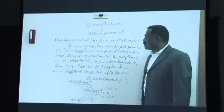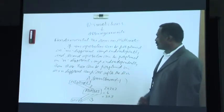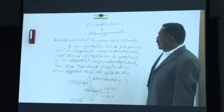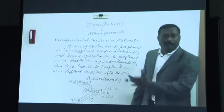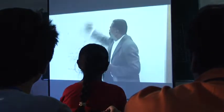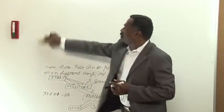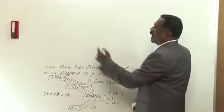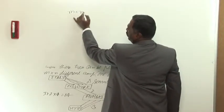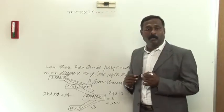If an operation can be performed in M different ways independently, and a second operation can be performed in N different ways independently, these two operations can be performed in m into n different ways, one after the other or simultaneously. And it can be extended to any number of operations — if the first operation can be performed in m ways, the second in n ways, the third in p ways and so on, then all these operations can be performed in m into n into p and so on different ways. This is called the fundamental theorem on arithmetic.